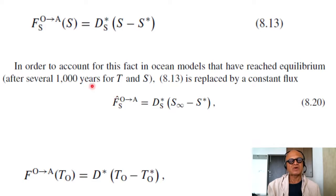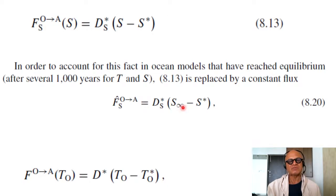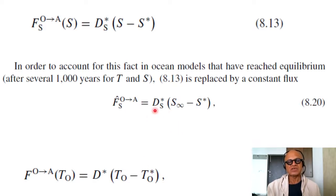The equilibrium salinity S_infinity is taken, and the freshwater or salinity flux is set to D times S* times (S_infinity minus S*), where S_infinity is the equilibrium salinity that is reached and S* is the specified salinity. This actually ends up creating an imbalance of sorts, where S* can drift and has no relation to the precipitation-minus-evaporation flux that's happening as you integrate forward. When you combine these two fluxes together, that's called the mixed boundary conditions.